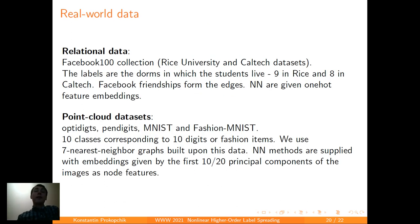We also tested our algorithms and all the other algorithms on real-world data. First of all is relational data. We took two data sets from Facebook 100 collection, Rice University and Caltech. The labels in these data sets are the dorms in which the students live, 9 in Rice and 8 in Caltech. And Facebook friendships form the edges. Since there are no features, neural network methods are given one hot feature embeddings.